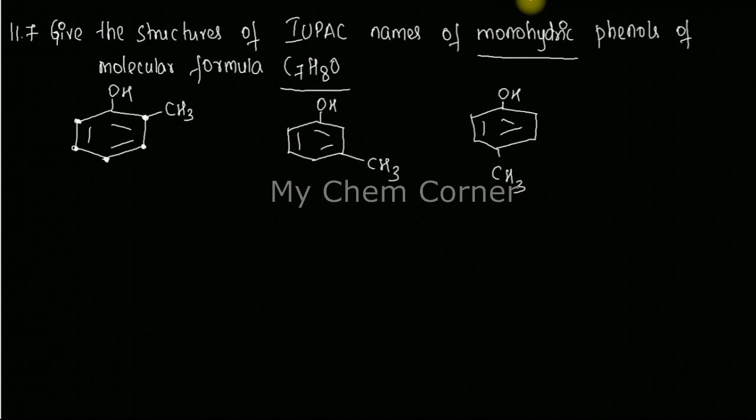Remember, when you have a compound like this, phenol is going to be the parent hydrocarbon. So in all three cases, it is going to be phenol. Now, when we are trying to number the carbons in the ring, you're going to follow the same rule